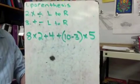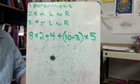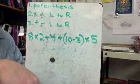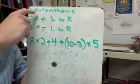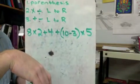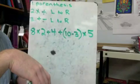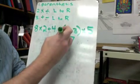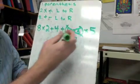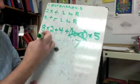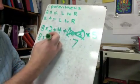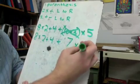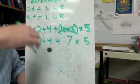This next problem looks very similar but there's one difference: we've got an extra set of parentheses. So I start with parentheses first — I have to take care of anything inside them. Ten minus three is seven. I cross out that set of parentheses, bring everything else straight down, and now I have times five. We got rid of the parentheses, so now we go to step two: multiply and divide from left to right.